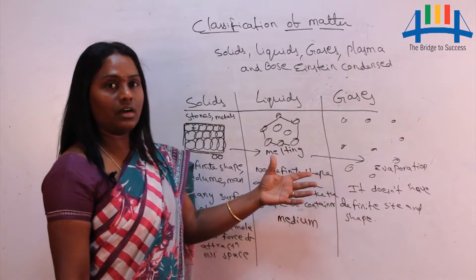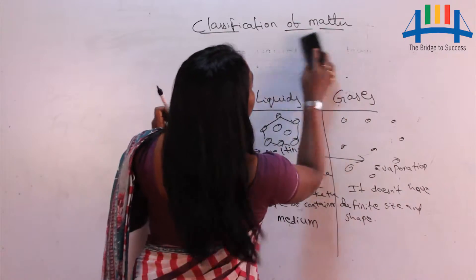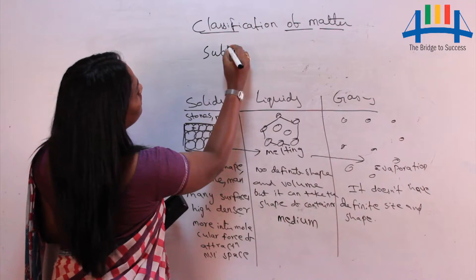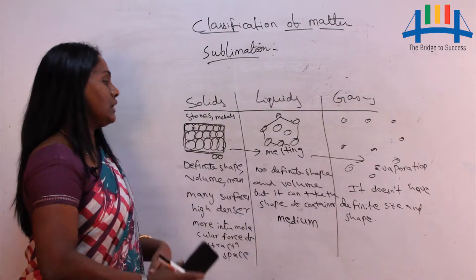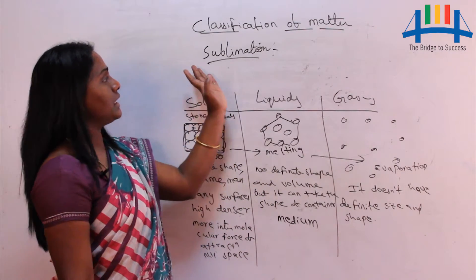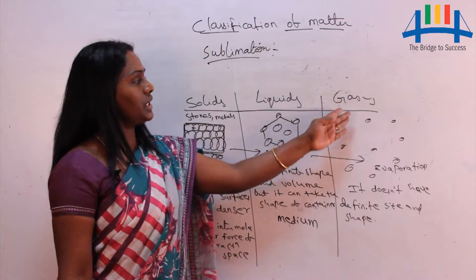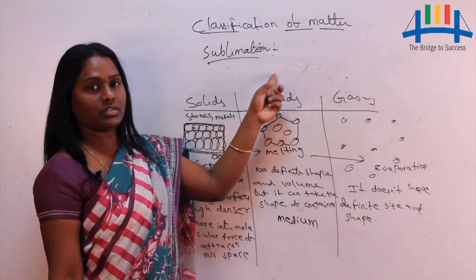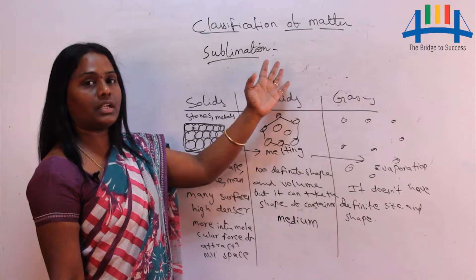Other than melting, evaporation, condensation, and freezing, one more phase transition is called sublimation. Sublimation means the direct conversion of solid state to gaseous state without going into the liquid state. This can be observed in the evaporation of naphthalene balls, where we get a strong smell.